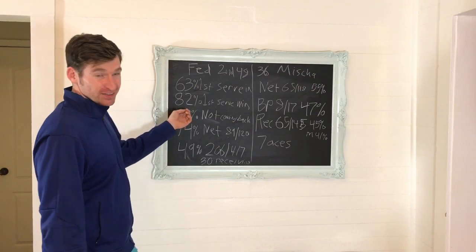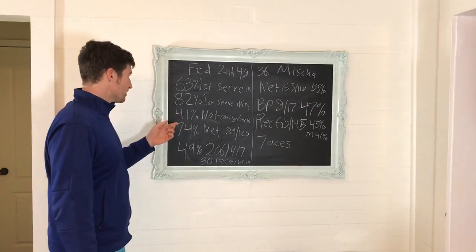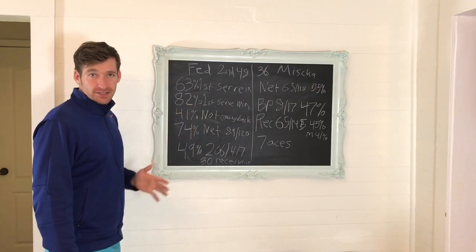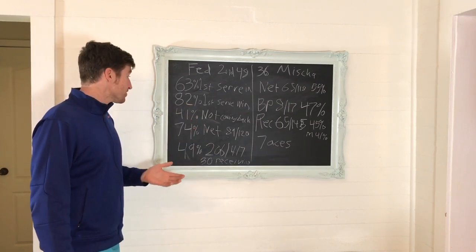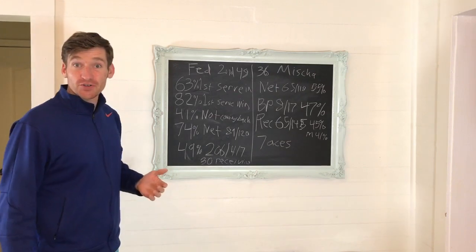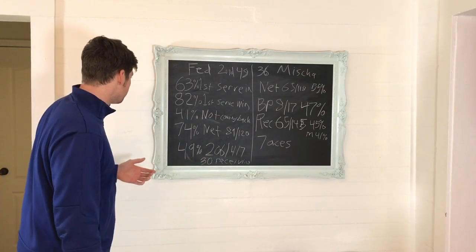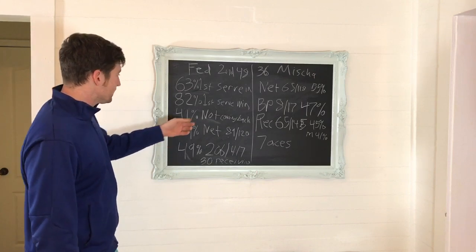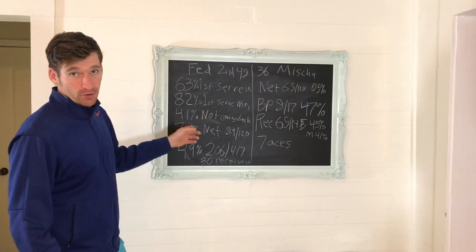41% of the time, I love this stat. 41% of the time the first serve goes in, it's not even coming back. He doesn't have to play another shot. Either it's an ace or the opponent hits it into the crowd, hits it into the net. Federer's done, he doesn't have to swing the racket again.